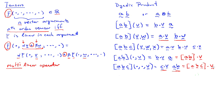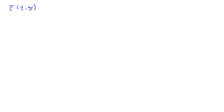The dyadic product is a very simple tensor, but let's look at what happens when we apply this notational convention to a bona fide second-order tensor. Consider the tensor f, second order, acting on two vectors v and w. Let me expand by writing v as v_i ê_i and w as w_j ê_j.